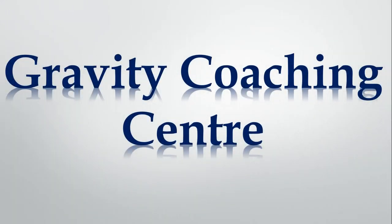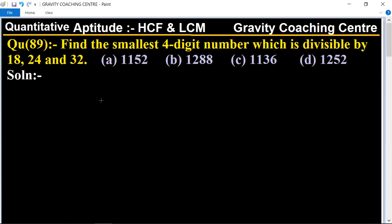Welcome to our channel Gravity Coaching Center, quantitative aptitude chapter HCF and LCM, question number 89. Find the smallest four-digit number which is divisible by 18, 24, and 32. In this question, first of all we will find the LCM of 18, 24, and 32.